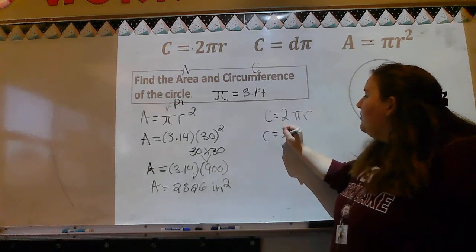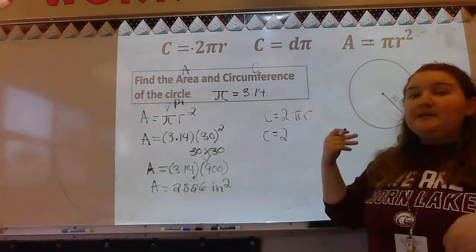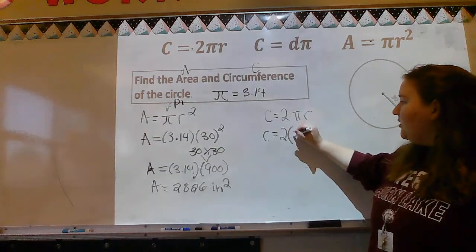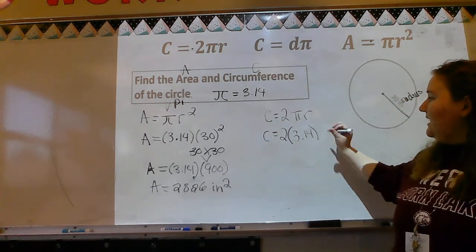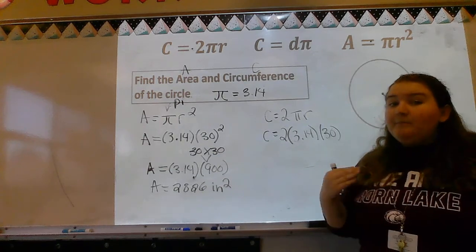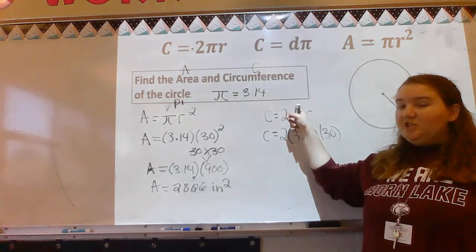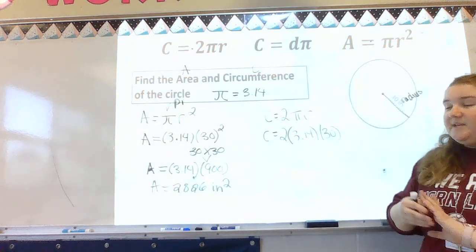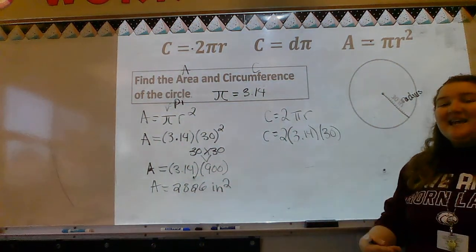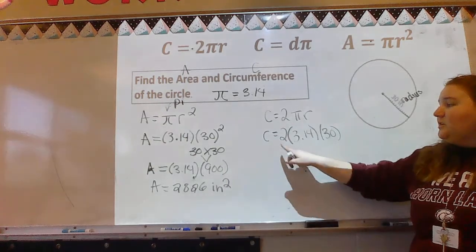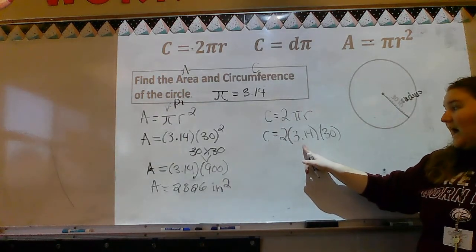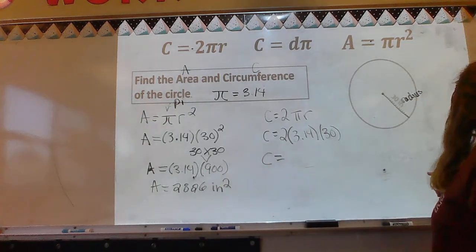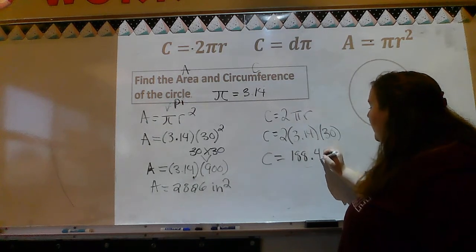C equals 2 pi r. C is my circumference. I'm going to bring down my 2, and now I plug in what I know: pi today is 3.14, so I put 3.14 in parentheses, and my radius is 30. When you see things smushed together like this, that means to multiply, and I wrote everything in parentheses to represent multiplication. So when I go to put this in my calculator, I am doing 2 times 3.14 times 30. The circumference is equal to 188.4 inches.